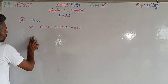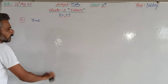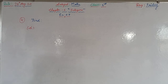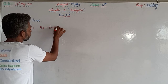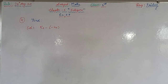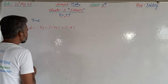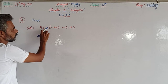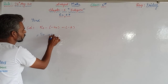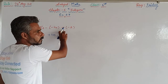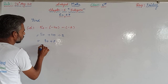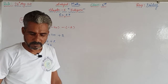The last part, D: 50 minus minus 40 minus minus 2. When a minus sign is outside the bracket, it changes the inner sign. Minus outside changes the inner minus to plus, giving 50 plus 40. Similarly, the next minus outside changes minus 2 to plus 2. So 50 plus 40 is 90, and 90 plus 2 is 92.